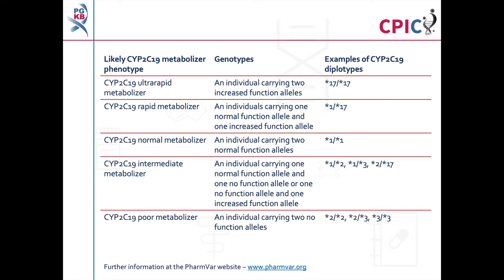There are currently over 30 defined alleles of CYP2C19, known as star alleles. Star alleles are characterized by their rate of function relative to the star 1 allele, which is designated as a normal function allele. Diplotypes of CYP2C19 star alleles can be assigned to a metabolizer phenotype, as shown in this table and in Table 1 of the guideline.